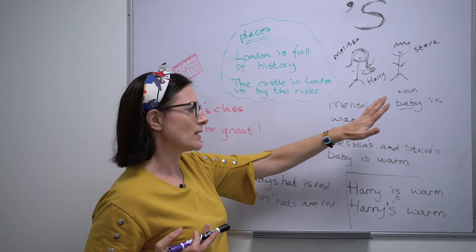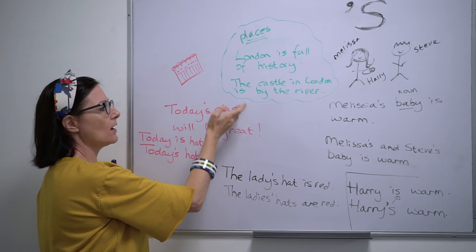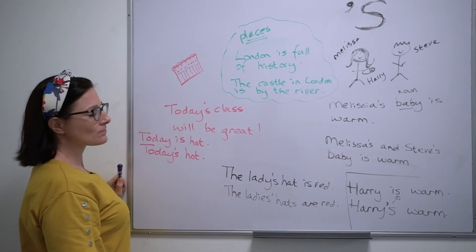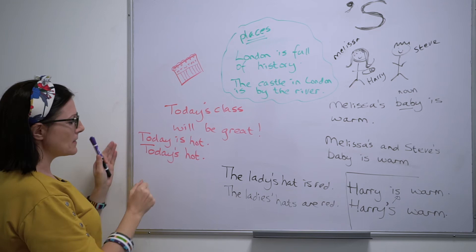When we use the apostrophe S to say that something belongs to somebody — for example, 'this is Melissa's baby' — we can also do it for time as well. So we can say 'today's class,' meaning 'the class of today.' Today's class will be great. The class belongs to today, just as the baby belongs to Melissa.